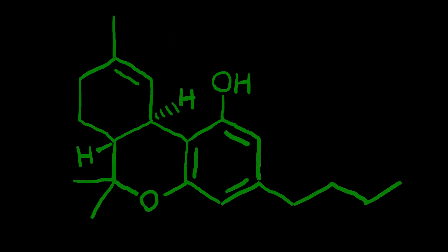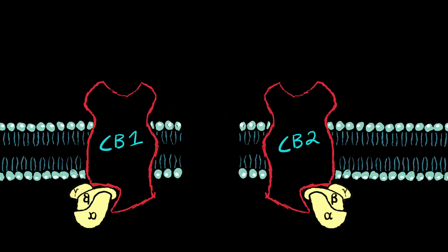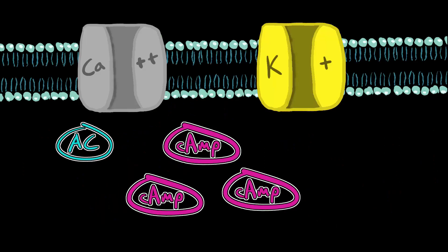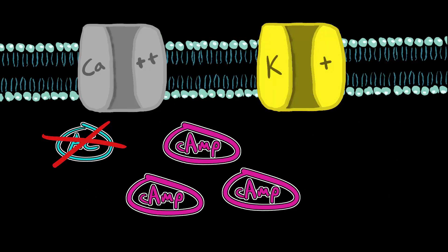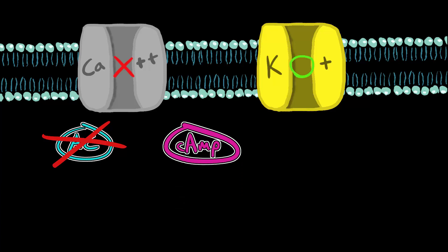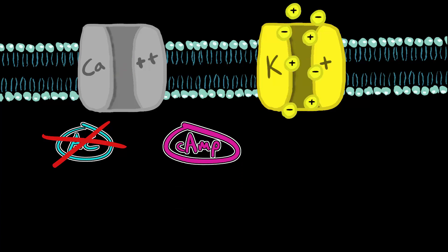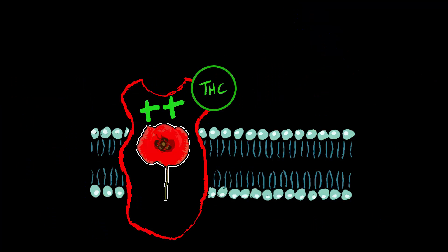THC bonds to the G-protein-coupled receptors known as CB1 and CB2. Activating these receptors inhibits adenylyl cyclase, resulting in decreased production of cAMP and changes in ion channel activity. Through these receptors, cannabinoids hyperpolarize neurons by closing voltage-dependent calcium channels and activating potassium channels. It also allosterically modulates opiate receptors.